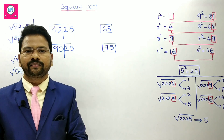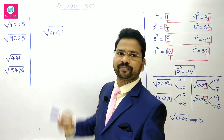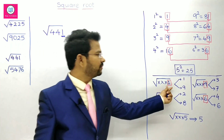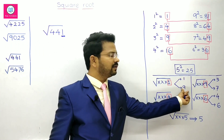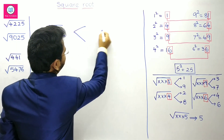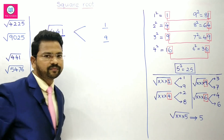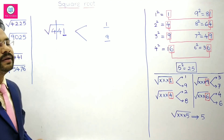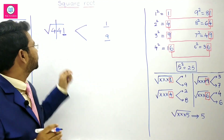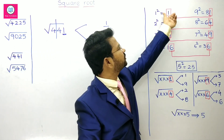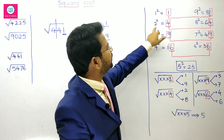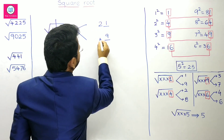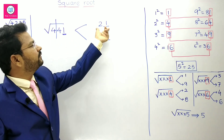Now the square root of 441. The number ends with 1, so whenever a number ends with 1, it may be either 1 squared or 9 squared. Leave the 2 digits and consider 4. Take the smaller number whose square is near to 4. That number is 4 itself — 2 squared is 4 — so we take 2. It may be either 21 or 29.